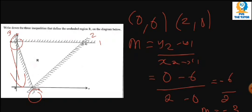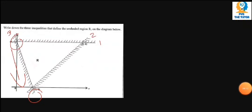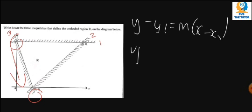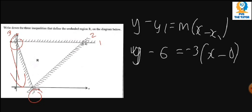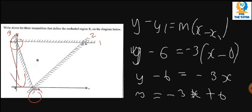So our value of m is negative 3. Now let's go on. We are going to use the same standard equation to find the inequality for this. So y minus y1 is equal to m times x minus x1. y minus y1, that is 6. Our gradient is negative 3. Then our x1, we know that our x1 is 0. Then it's y minus 6 equals negative 3x. So this gives us y is equal to negative 3x plus 6.